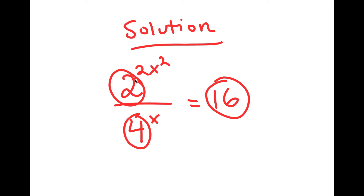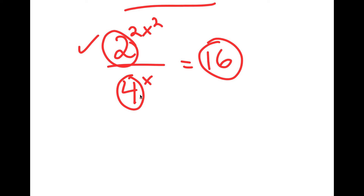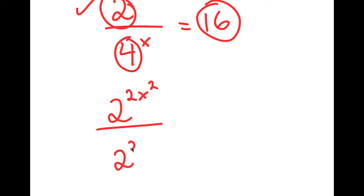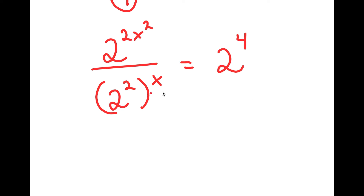My numerator here is already a base of 2, so we don't need to change that. For my denominator 4 — what's 4's relationship with 2? Well, 4 is the same thing as 2 squared. So I get 2 to the power of 2x squared over 2 squared to the power of x, is equal to 16, which is the same thing as 2 to the power of 4. Now all my terms are of base 2, and it's much easier to solve.